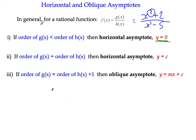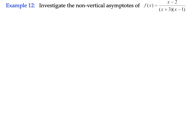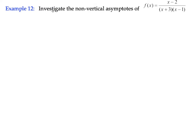We're going to have a look over the next few examples at each different case. So example 12, the first one, we're going to have a look at the horizontal asymptote y equals 0. It's the least common one to come across when we're studying them, because there's a special case for them. So let's investigate the non-vertical asymptotes of this function here.